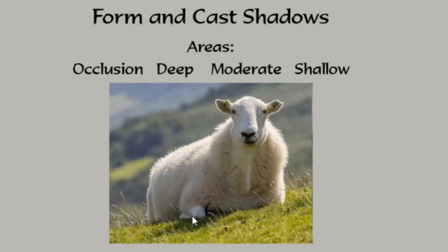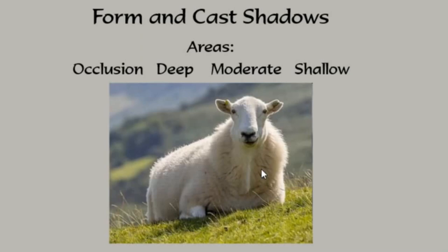Without the occlusion shadow, the image is going to look as if it's floating, so it's important to put that little occlusion shadow in there. Beyond the occlusion shadow, we see variations in shadow. This form shadow is darker right where it joins the occlusion, and then it begins to get a little lighter. That sequence varies on images depending upon the shape, curvature, flatness, and how the images turn in and out. It's important to recognize the degree of dark we're seeing as the shadows gradate.